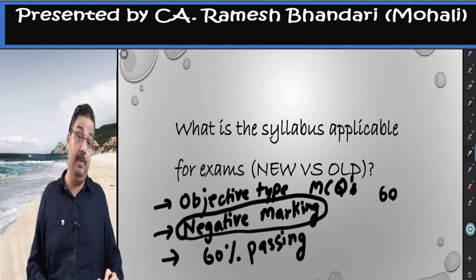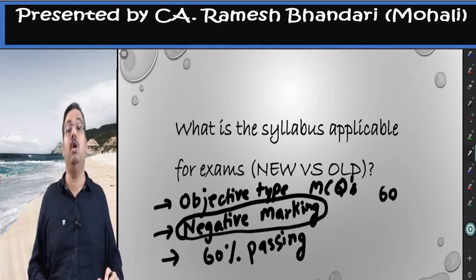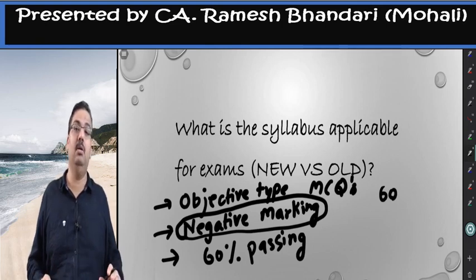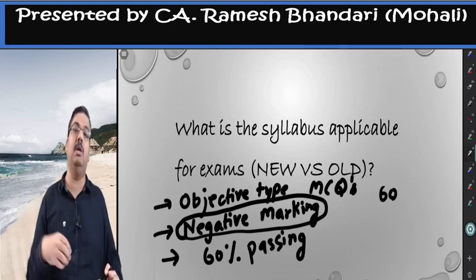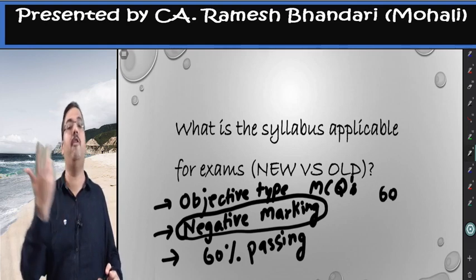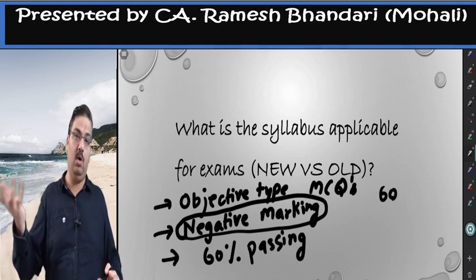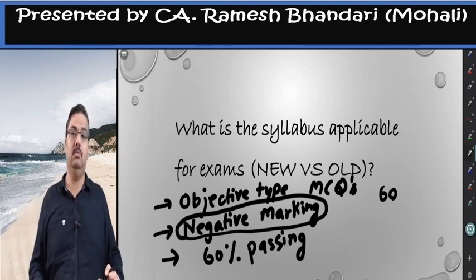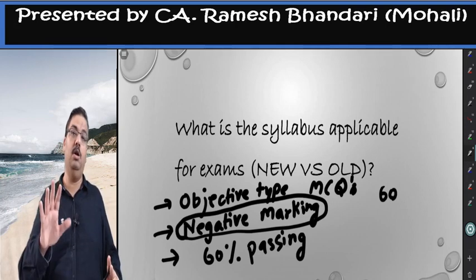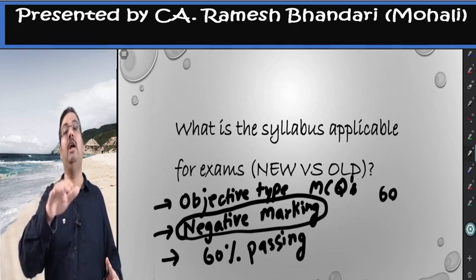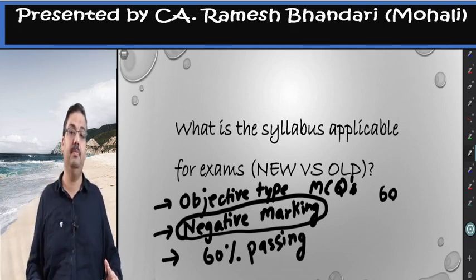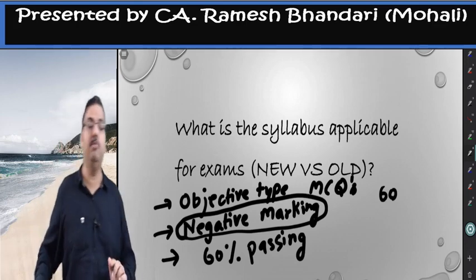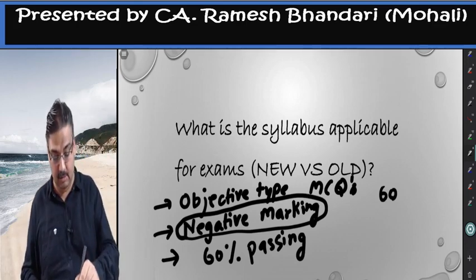Those already preparing under the old course who switch to the new course will have to work out amendments carefully. I am not a legal expert, but even one word of an amendment can make or break 1.25 marks — a correct question done wrongly means one mark gone plus 0.25 negative marking. That is something you will have to work out.